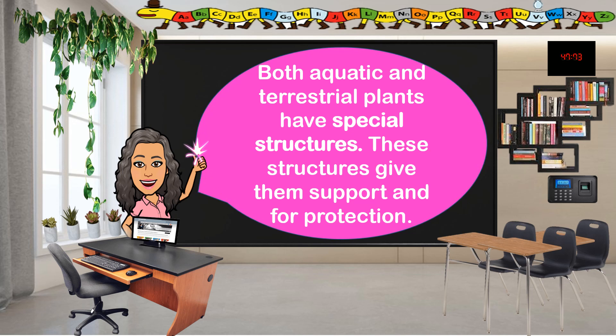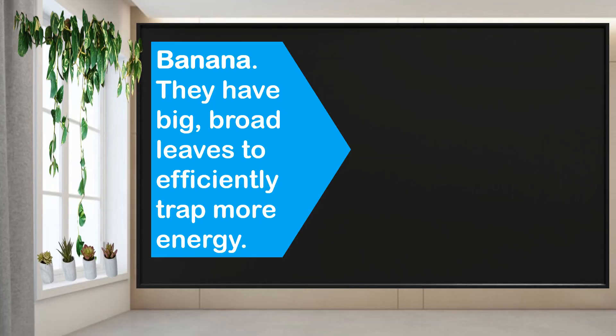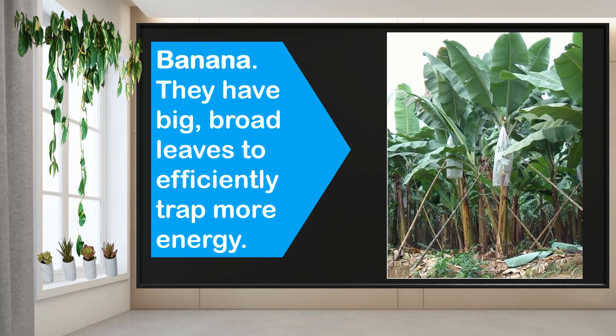Both aquatic and terrestrial plants have special structures. These structures give them support and full protection. First, let's have the banana. Bananas have big, broad leaves that enable them to trap more energy coming from the sun.